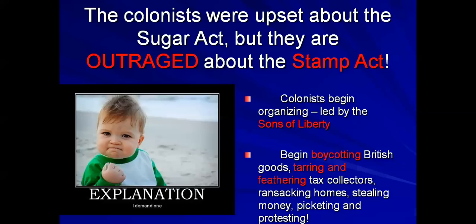They explained what was going on in Boston to the rest of the colonies, telling colonists to boycott British products — meaning not to buy British goods. But it also got very, very violent. They threw rocks through the windows of stamp collectors' homes, stole money, picketed, and protested. Most notably, there was the tarring and feathering of tax collectors, which was meant to humiliate them but was also extremely painful — they poured scalding hot tar over their bodies after stripping their clothes off, leading to first-degree burns. Many stamp collectors died from their wounds, and those who didn't were scarred for life.